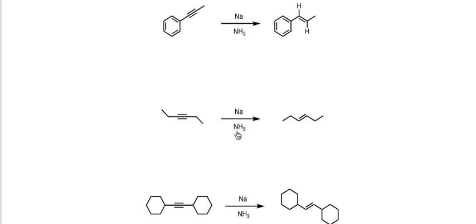And here again, we're forming a trans alkene. The hydrogens, although we haven't drawn them in explicitly, are trans to each other. And again, this is giving us that stereochemistry for the product and not the cis.